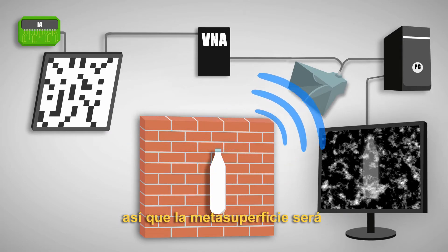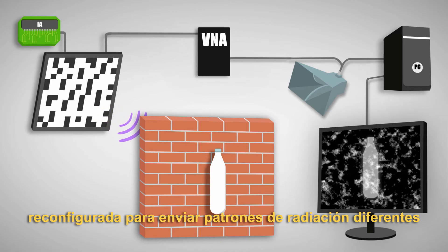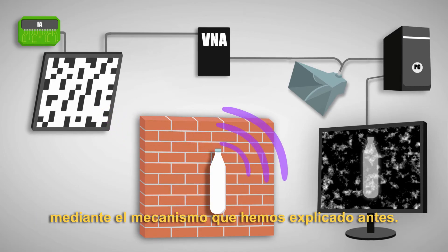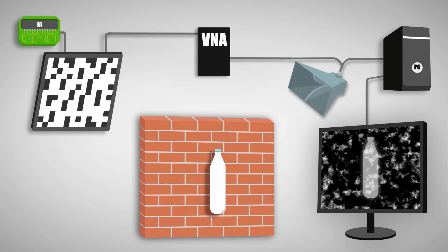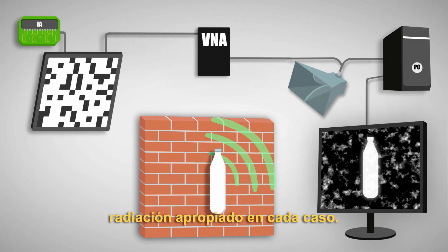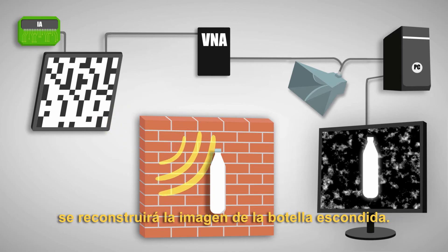One radiation pattern is not enough, so the metasurface will be reconfigured to send different radiation patterns by the mechanism we have explained before. Artificial intelligence will be deciding the best radiation pattern in each case. Finally, the contribution of several radiation patterns will reconstruct the image of the hidden bottle.